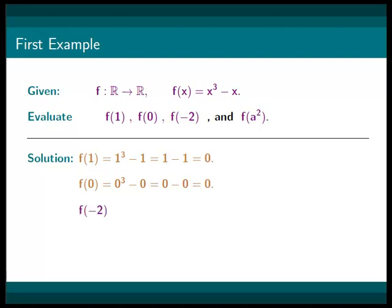For f at negative 2, we will do the same. We will get negative 2 cubed minus negative 2, which is negative 8 plus 2. Then our answer will be negative 6.